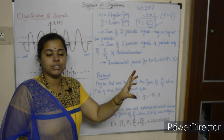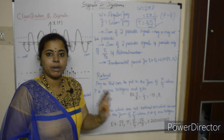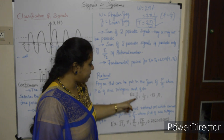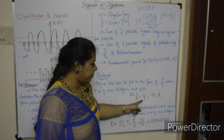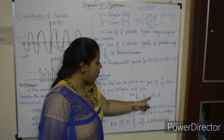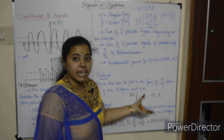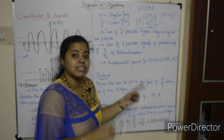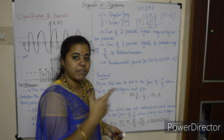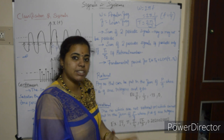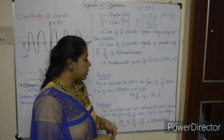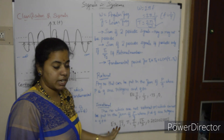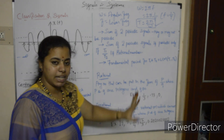Examples of rational numbers: 7/8, 1/3, 0.73 (which can be expressed as 73/100 — both integers). All these are rational numbers.